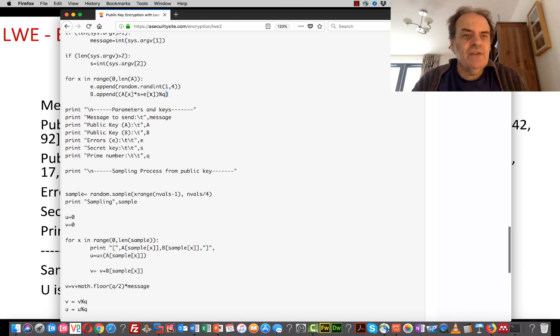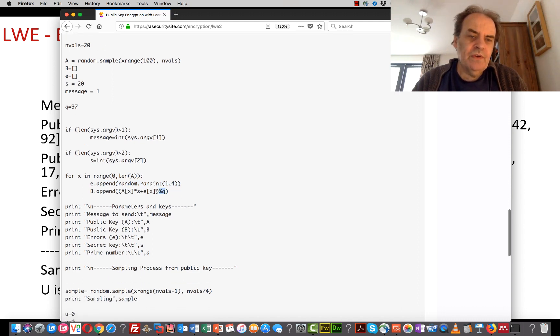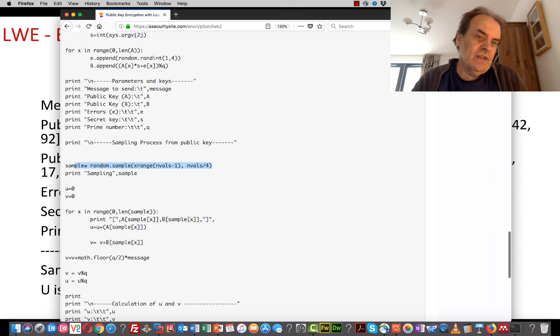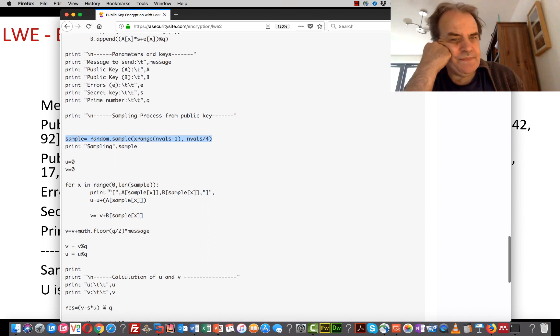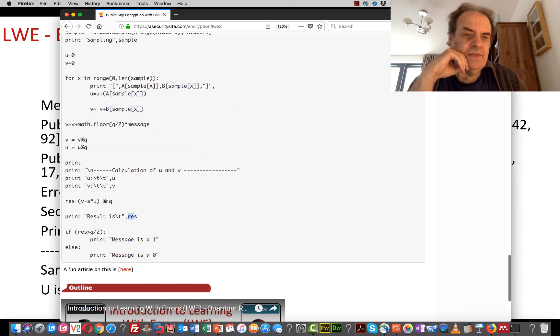After this, we generate our B array based on our E value. The E array is just a random integer from 1 to 4, and then we do mod Q at the end to do our calculation. We'll take some random samples across the whole of the vector, and from there we can work out the U value and the V value. Then we add on this value here.